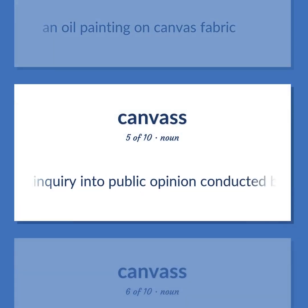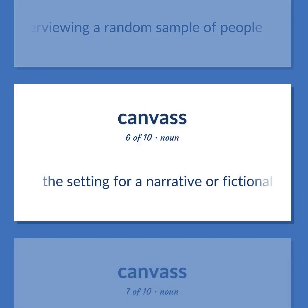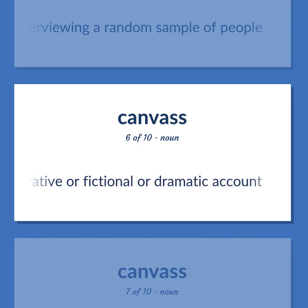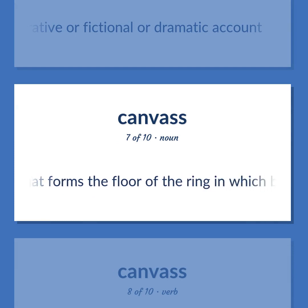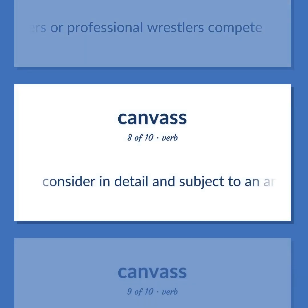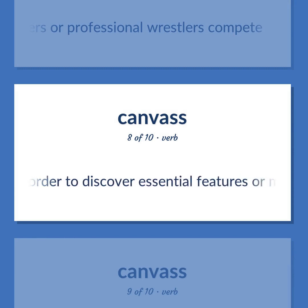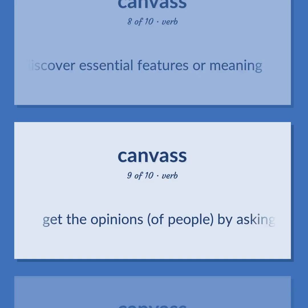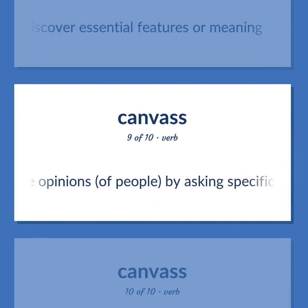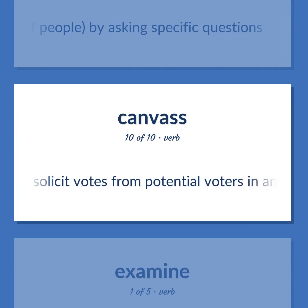An inquiry into public opinion conducted by interviewing a random sample of people. The setting for a narrative or fictional or dramatic account. The map that forms the floor of the ring in which boxers or professional wrestlers compete. Consider in detail and subject to an analysis in order to discover essential features or meaning. Get the opinions of people by asking specific questions. Solicit votes from potential voters in an electoral campaign.